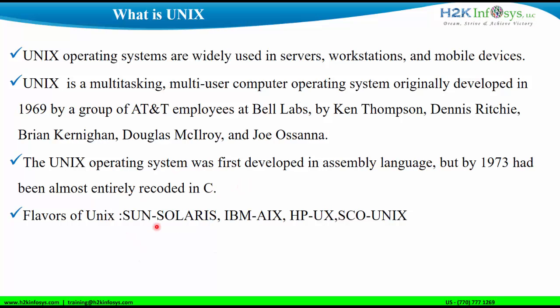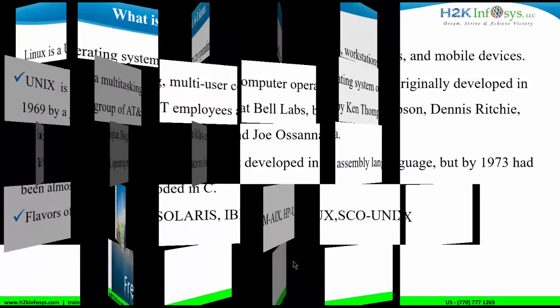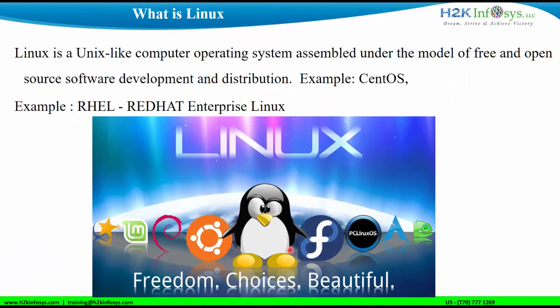These are the different flavors of Unix that are available: Sun developed Solaris, IBM developed AIX, and HP developed UX.